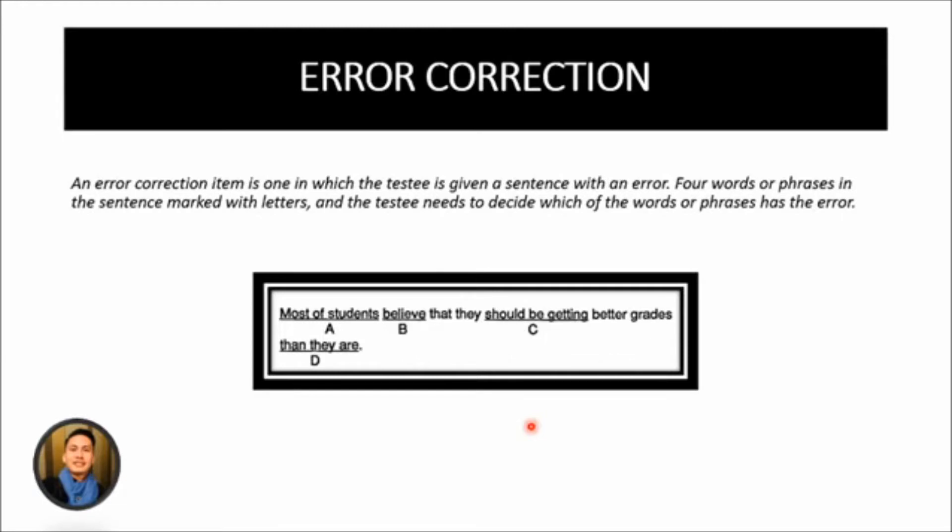Error correction items are also useful for testing grammar. An error correction is one in which the testee is given a sentence with an error. Four words or phrases in the sentence marked with letters and the testee needs to decide which of the words or phrases that has been underlined has the error. For example, here: most of the students, let's letter A, believe that they should be getting better grades than they are.